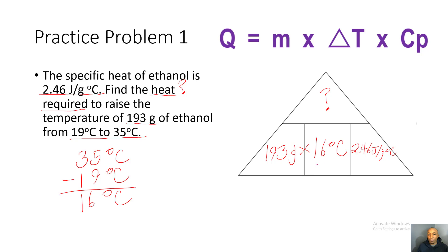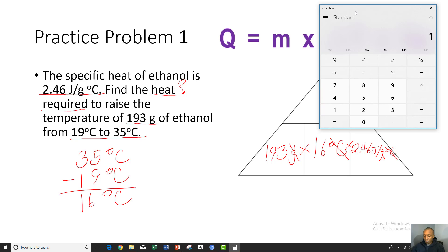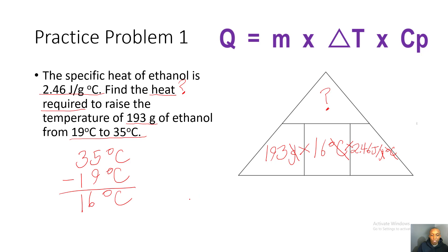We cross out like units: grams cancel with grams, and degrees Celsius cancels with degrees Celsius, leaving us with joules. Using the calculator: 193 times 16 times 2.46 gives us 7,596.48 joules. So our heat energy for this problem is 7,596.48 joules.